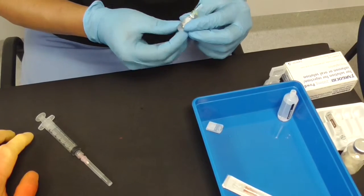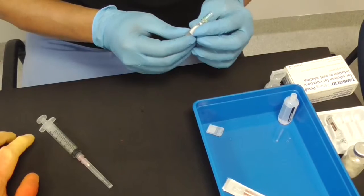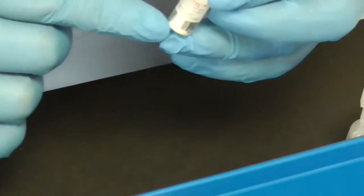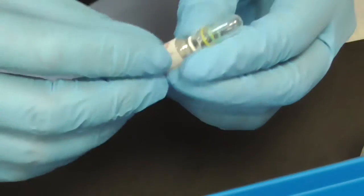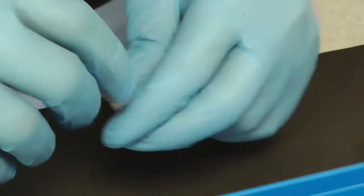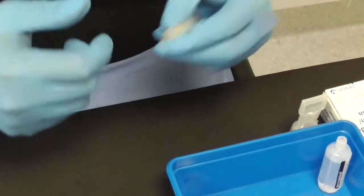Sometimes you have things like this. This is a bit of Adcortyl, and you can see there's a bit of solid stuff inside there, solid white thing inside the fluid. Before you take it, you've got to swirl it around a bit, make sure that you dissolve it. Swirling around like this will dissolve it before you draw it up.